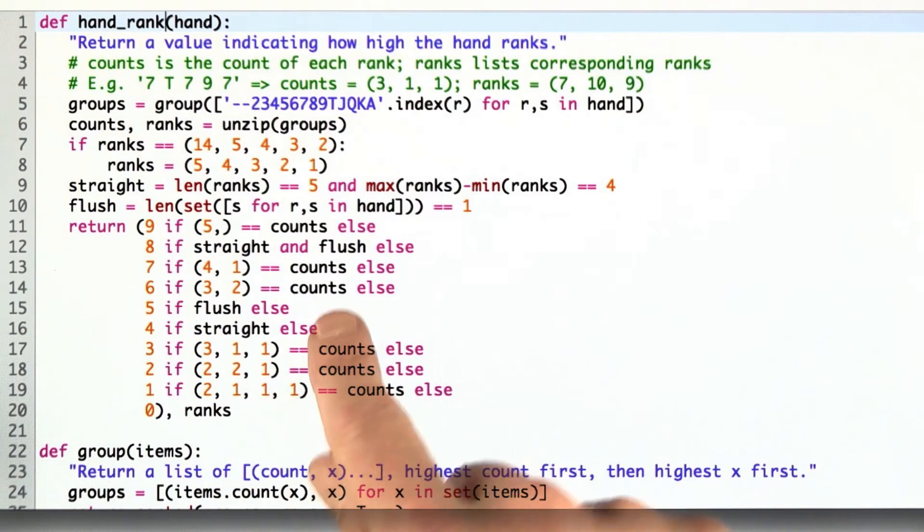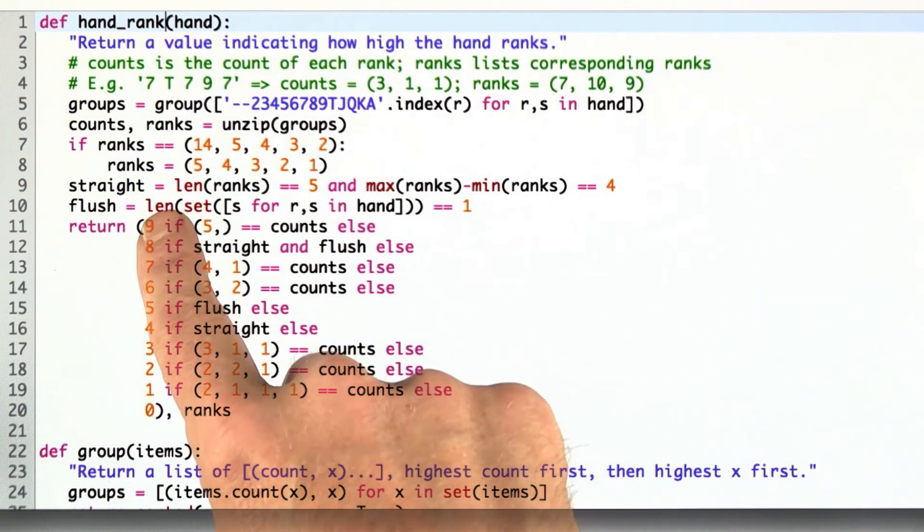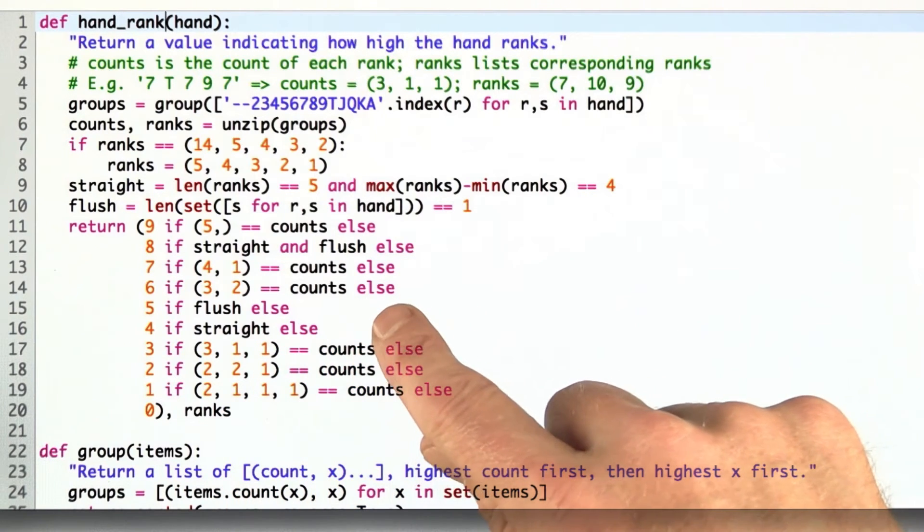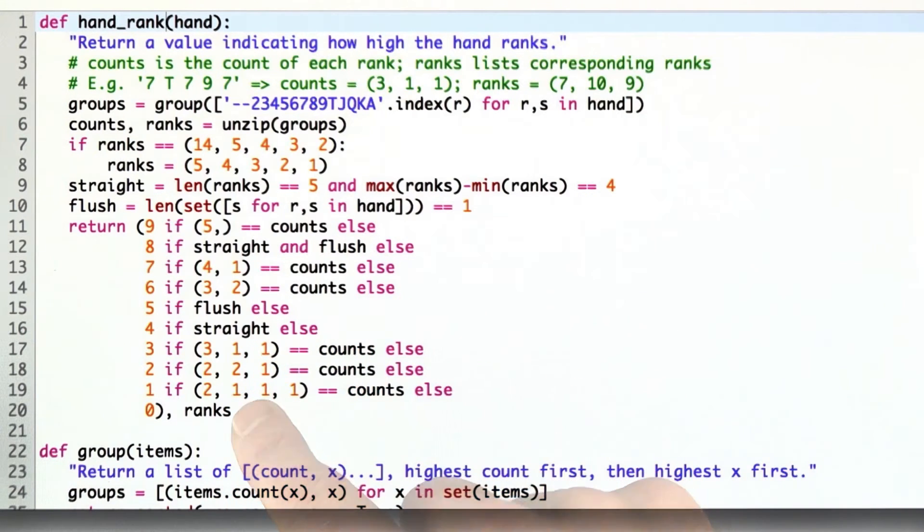Why is it slightly different? Because we're only returning a single number, and then we always return the set of ranks, and those ranks are there even when they aren't needed. For example, when we have a straight, we don't really need all the cards in the ranks. In the previous version of hand rank, we only returned the high card. Here we're returning all of them.